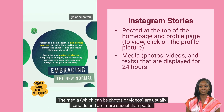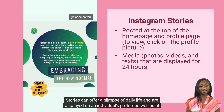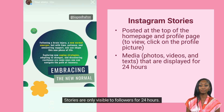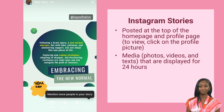The media, which can be photos or videos, are usually candids and are more casual than posts. Stories can offer a glimpse of daily life and are displayed on an individual's profile, as well as at the top of the home page of those who follow you. Stories are only visible to followers for 24 hours, after which they are archived.